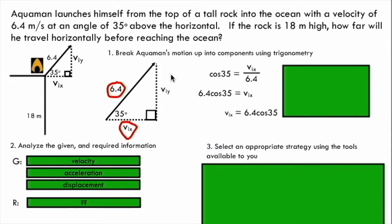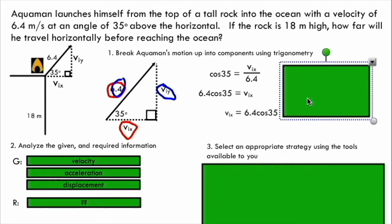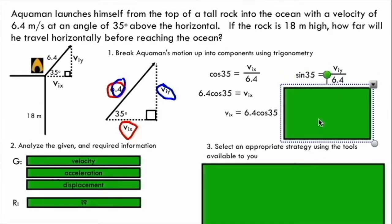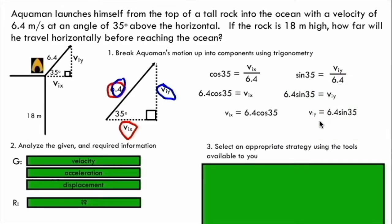I'm going to do the same thing solving for viy. So this time looking at this angle I've got the opposite side and I've got the hypotenuse again. The opposite and the hypotenuse side are related using the sine ratio. Using a similar process I can solve for viy. So I've now got two velocity components, one for the horizontal, one for the vertical direction.